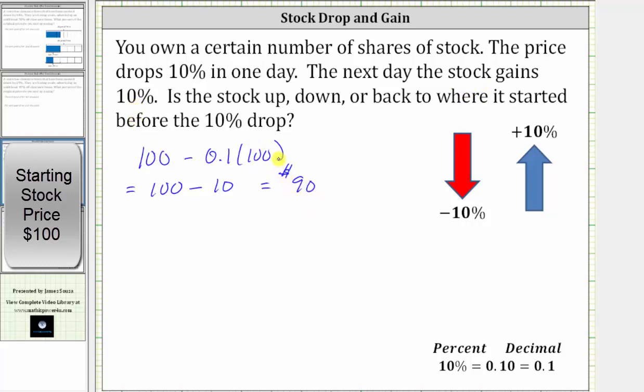So to find the stock price after the 10% gain, we begin with $90 and then add 10% of 90, which is equal to 0.1 times 90. Simplifying, we have 90 plus 0.1 times 90 is equal to 9. 90 plus 9 is equal to $99.